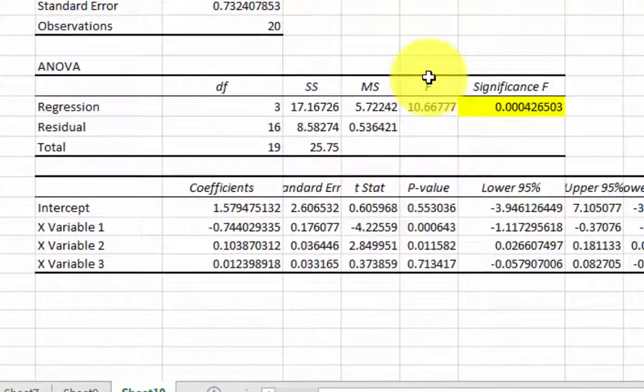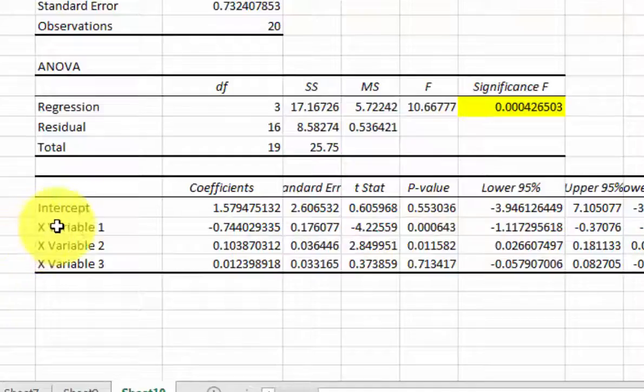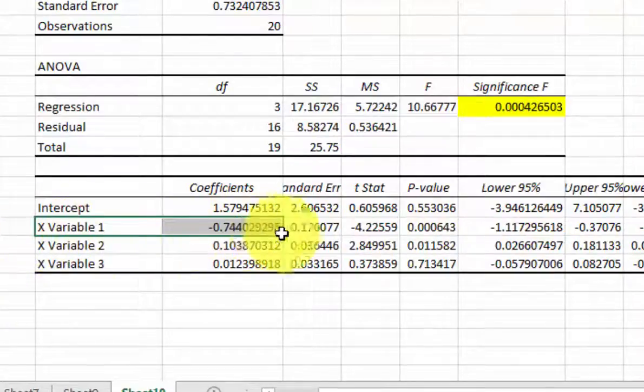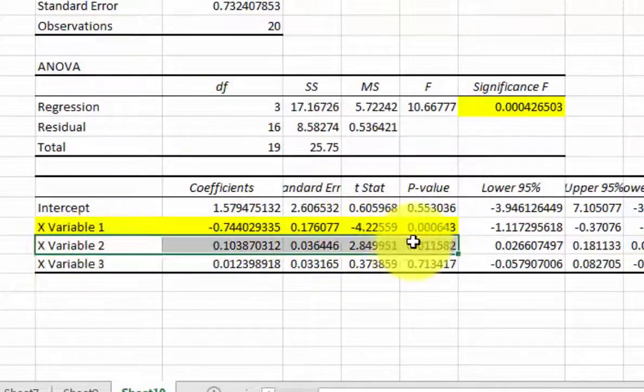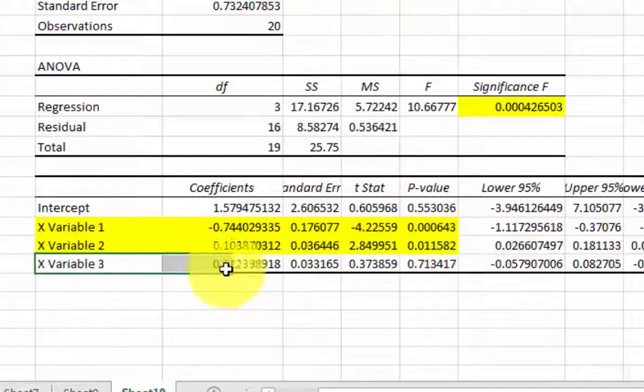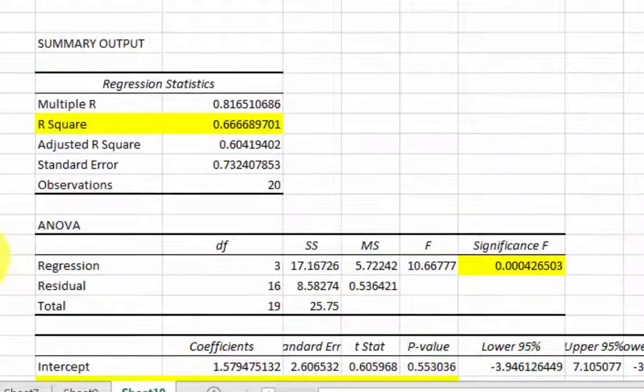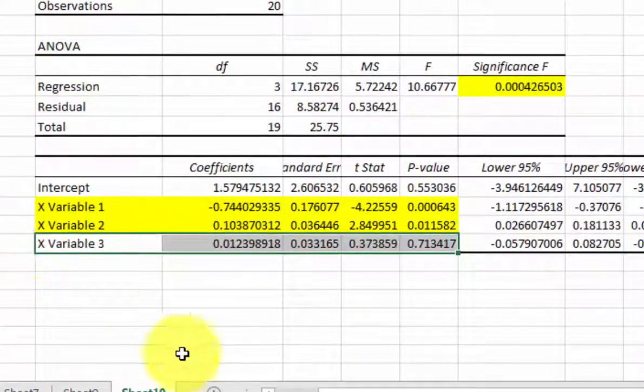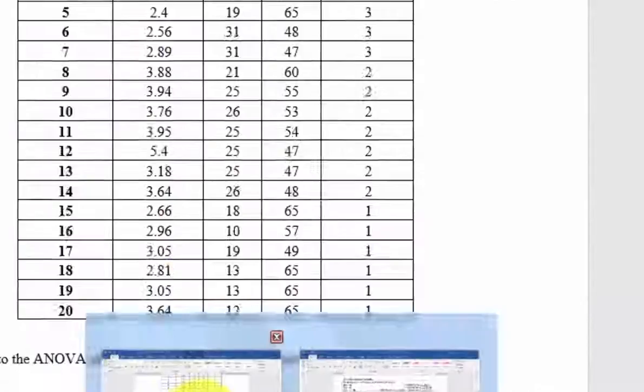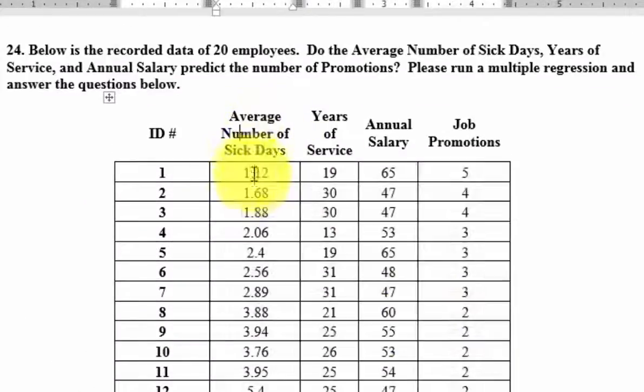And let's see which of the predictors is significant. So the first one is significant, the second variable is significant, because the p-values are less than 0.05, but the third variable is not. That is interesting. So number of sick days, yeah, that can predict how many promotions. How long you've been there can predict, but your annual salary is not a good predictor of how many job promotions you're going to have.